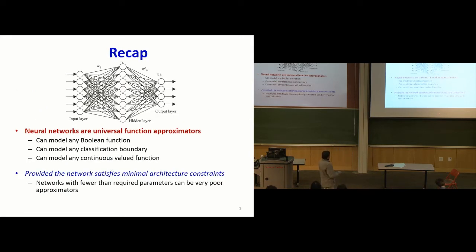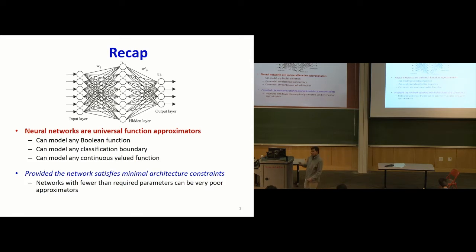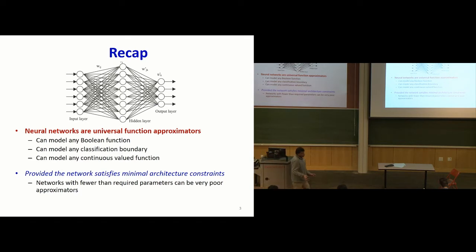Here's a quick recap. We've seen that neural networks are universal function approximators — they can model any Boolean function, any classification boundary, any continuous-valued function. Provided, as we saw in the last class, the network has the structural capacity to model the specific function of choice. If the network is too small, it cannot model the function you want properly.